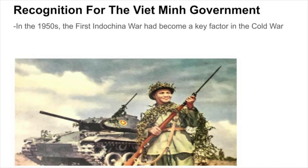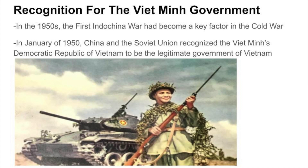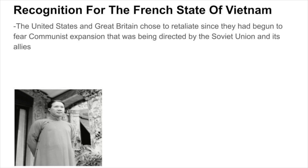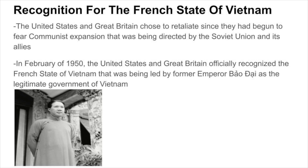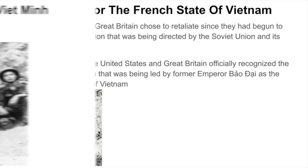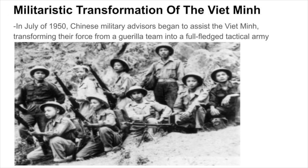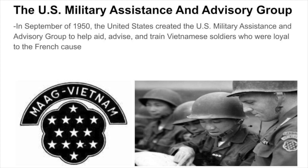In the 1950s, the First Indochina War had become a key factor in the Cold War. In January of 1950, China and the Soviet Union recognized the Viet Minh's Democratic Republic of Vietnam as the legitimate government. The United States and Great Britain retaliated, fearing communist expansion directed by the Soviet Union. In February of 1950, the U.S. and Great Britain recognized the French state of Vietnam led by former Emperor Bao Dai. In July of 1950, Chinese military advisors began to assist the Viet Minh, transforming their force from a guerrilla team into a full-fledged tactical army. In September of 1950, the U.S. created the Military Assistance and Advisory Group to aid, advise, and train Vietnamese soldiers loyal to the French cause.